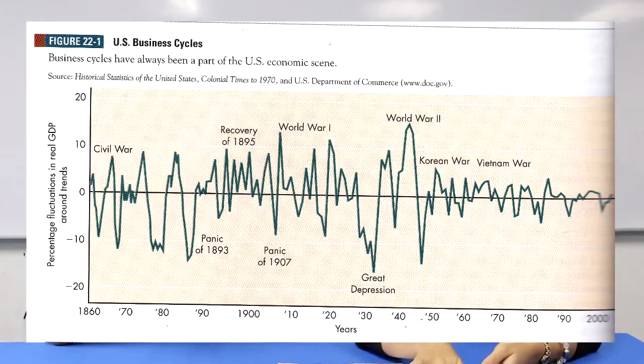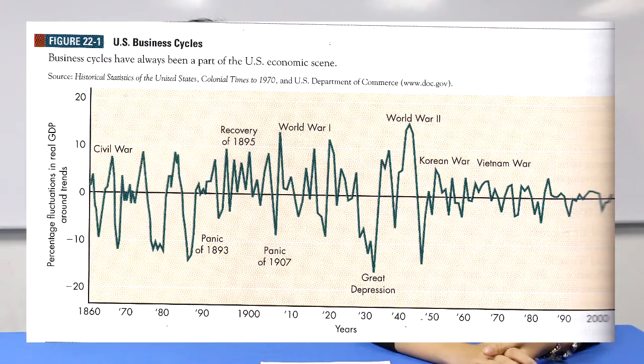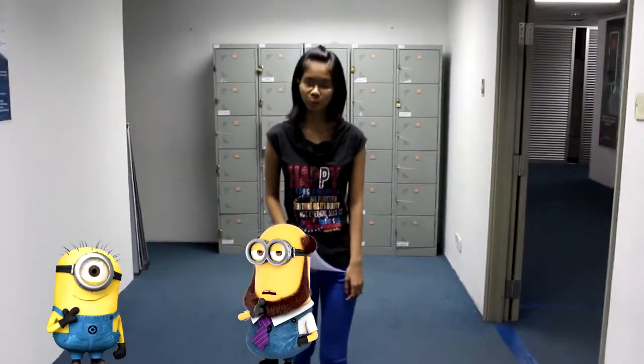Let's look at the business cycle of the United States. Notice that since the Korean War, the business cycle has become more stable and fluctuates less. This is a prime example of how government intervention can play an important role in stabilizing the economy. And when cyclical unemployment is zero, the government has successfully created a condition called full employment. So, what is full employment?